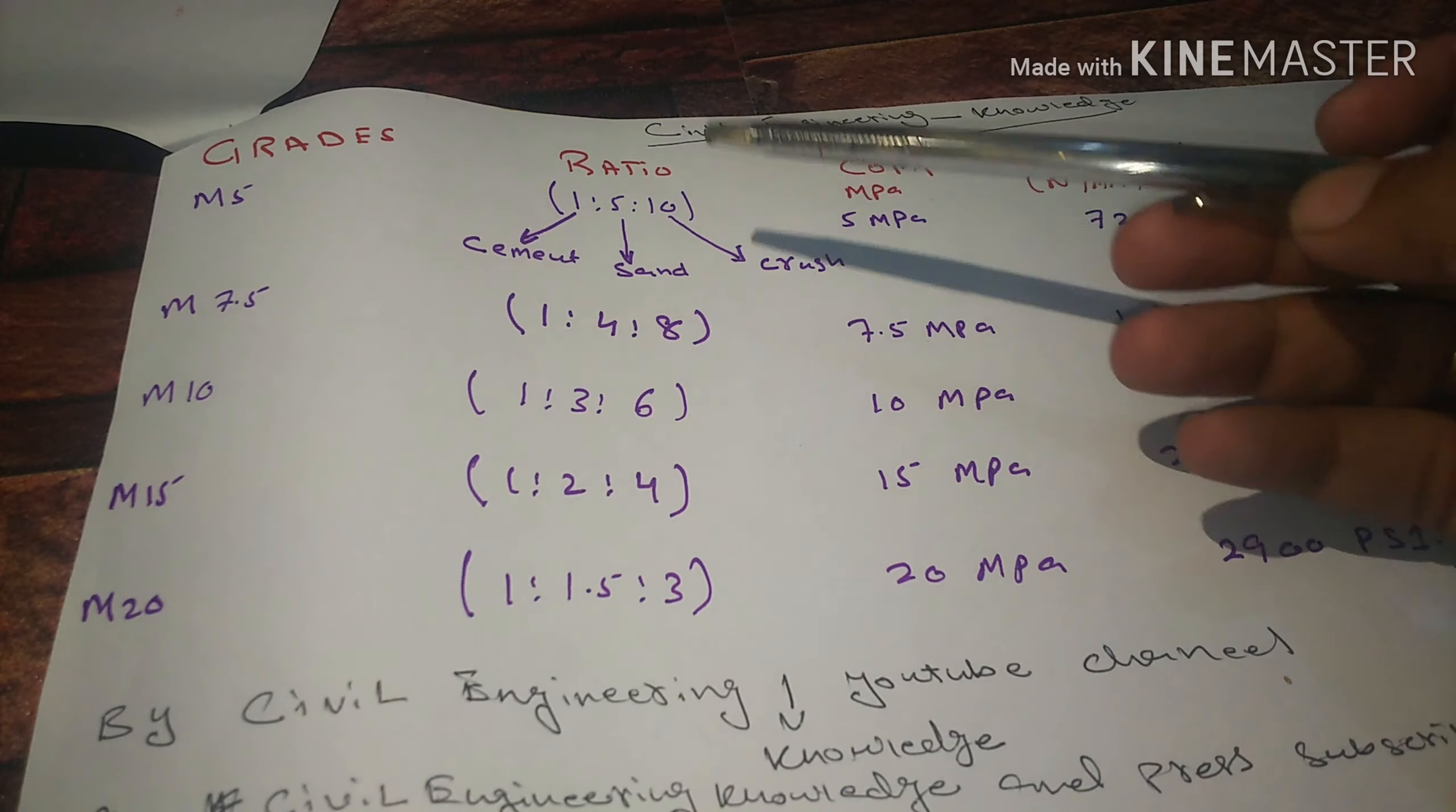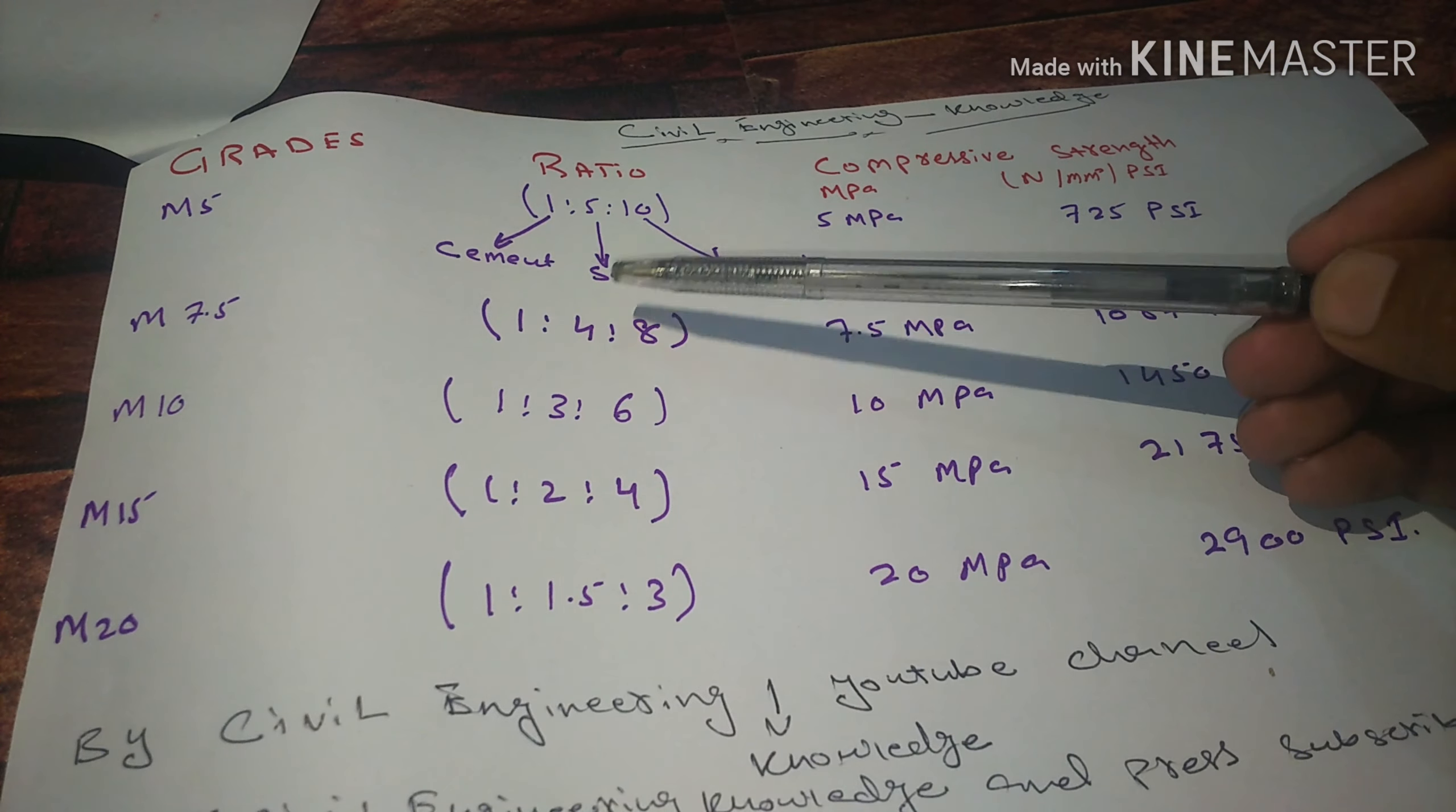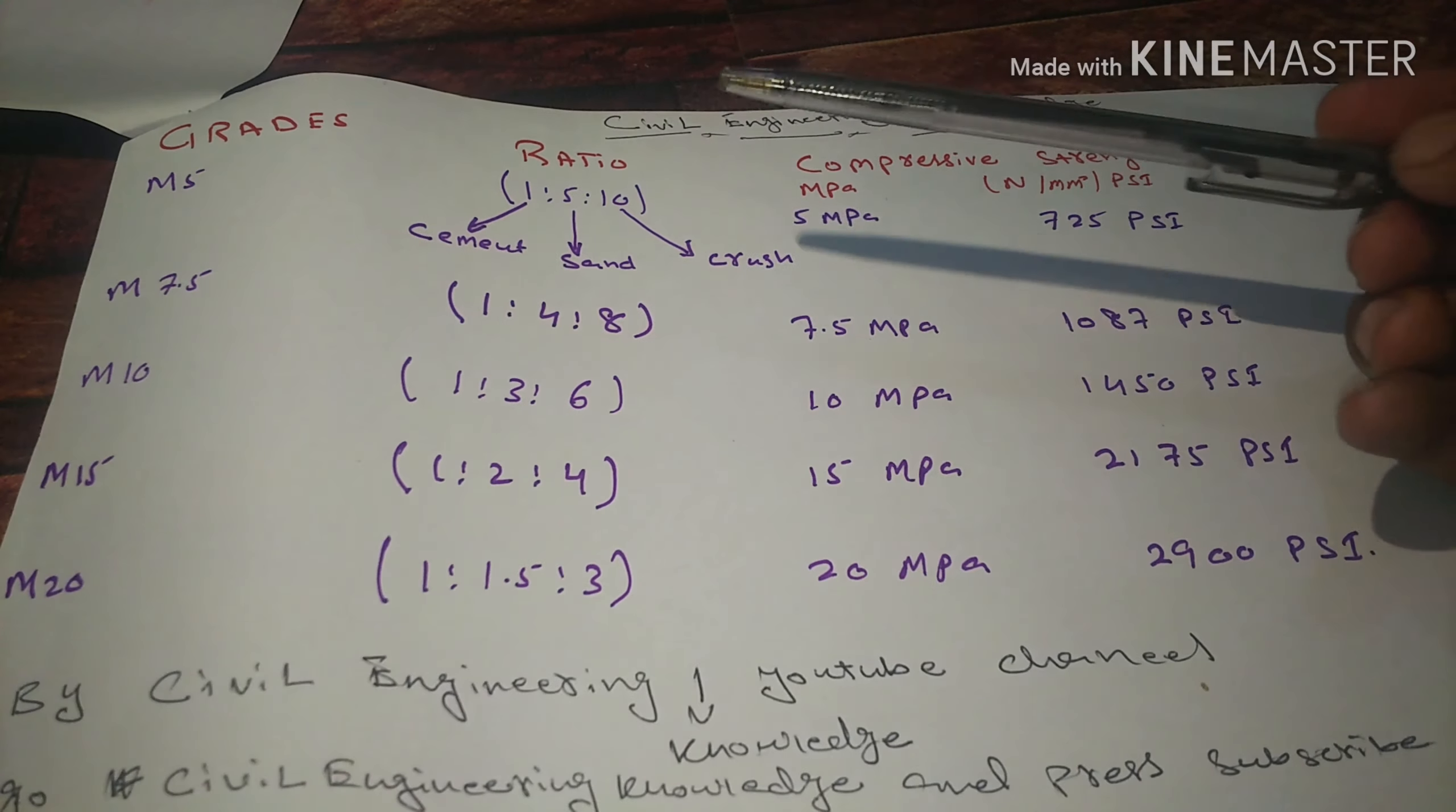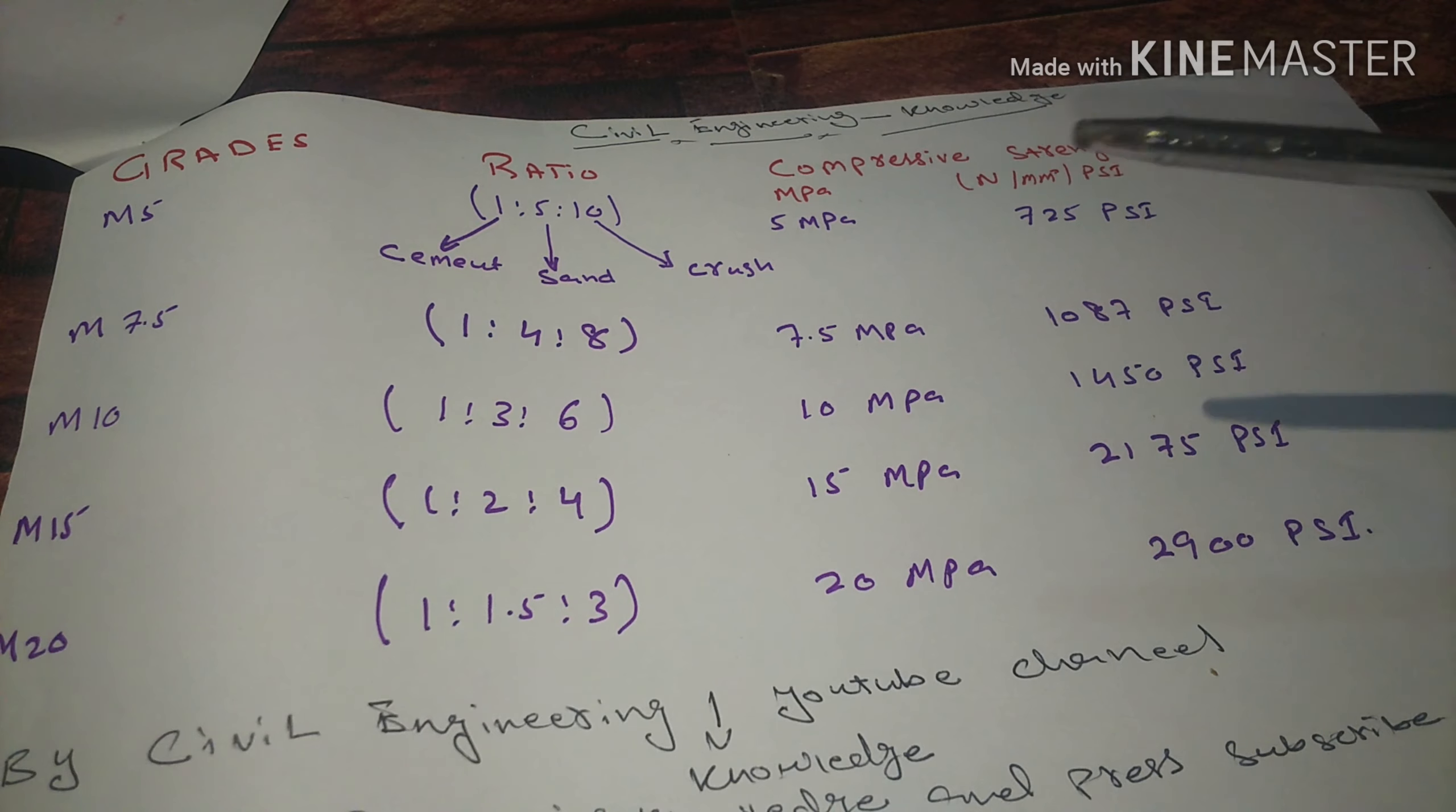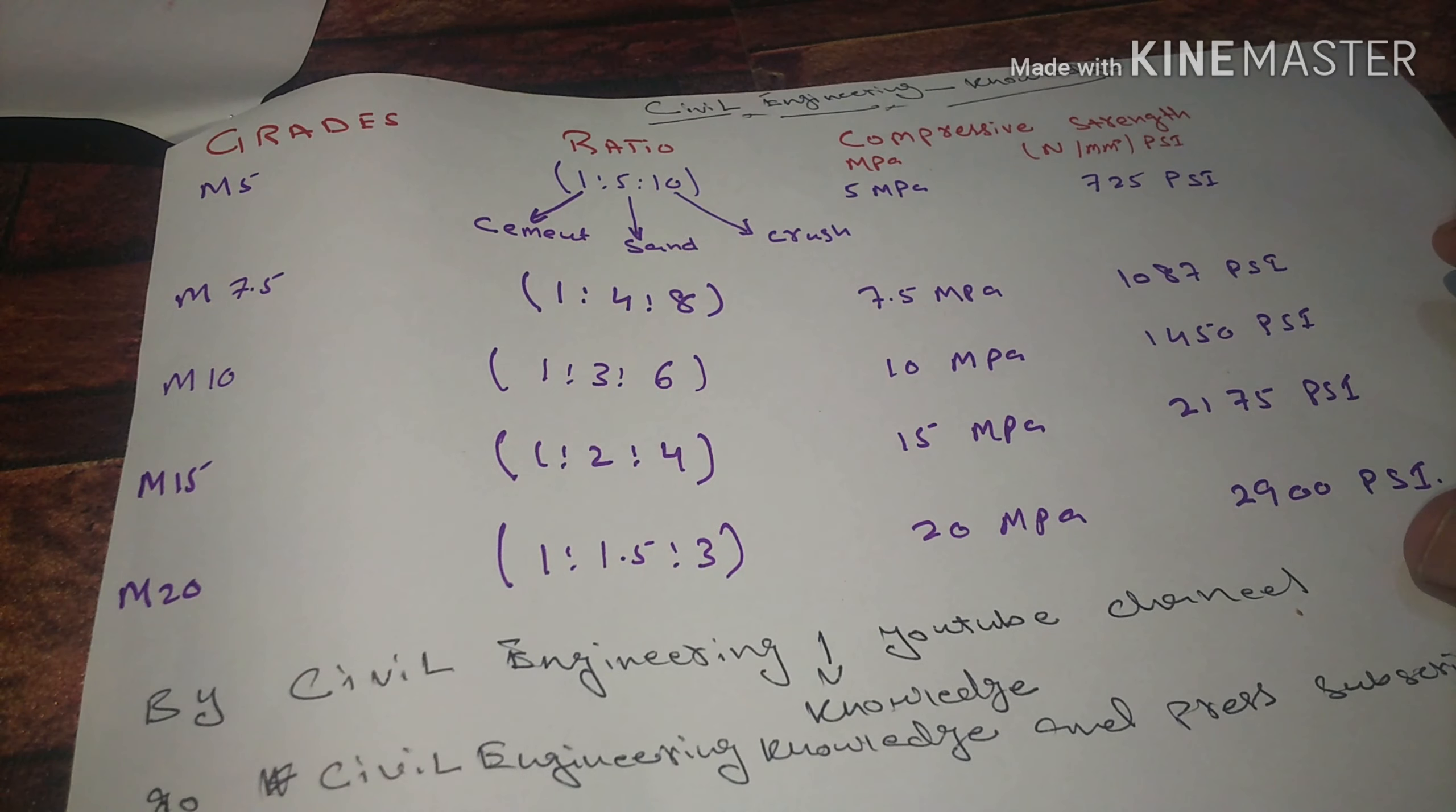Number one is M5 concrete, which is 1 part of cement, 5 parts of sand, and 10 parts of crush. This is 5 MPa and the PSI is 625 pounds per square inch.